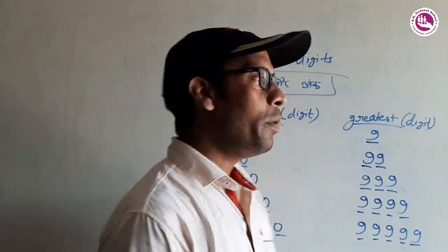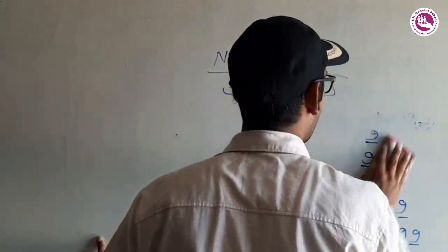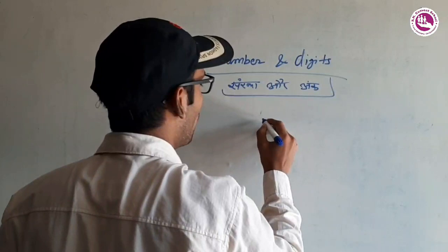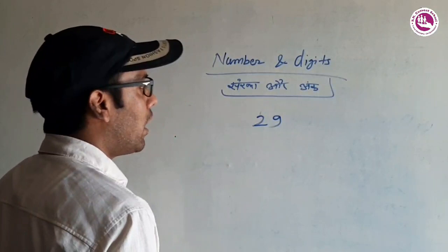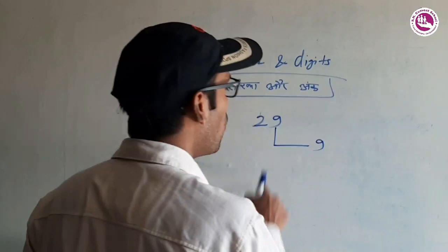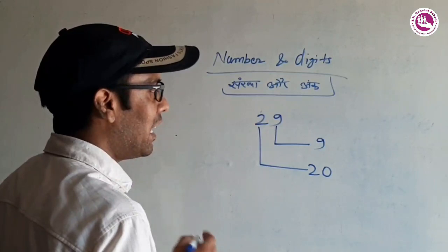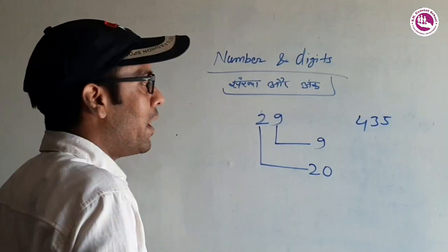Now we will see the place value of digits. How many digits? We can see the place value of 29 — this is a 2-digit number. The place value of 9 is the ones place. The place value of 2 is the tens place, so 2 is at the tens place, making its value 20.